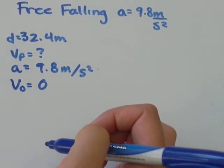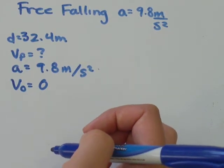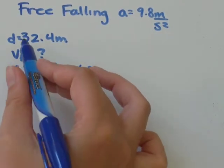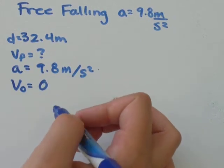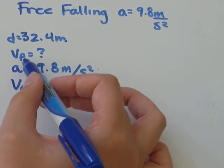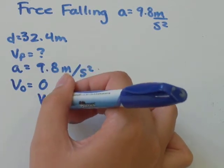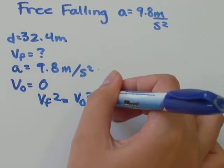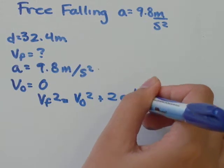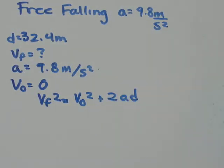but that's okay, because one of our kinematic formulas doesn't involve time but involves all the variables that we have and the one that we're looking for, which is VF. So this is the one I'm thinking of. VF squared equals V naught squared plus 2AD.